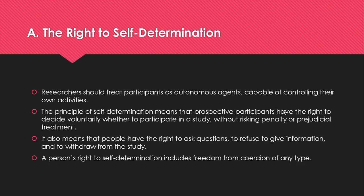A person's right to self-determination includes freedom from coercion of any type. Coercion involves explicit or implicit threats of penalty for failing to participate or excessive rewards for agreeing to participate. The obligation to protect people from coercion requires careful thought when researchers are in a position of authority, control, or influence over potential participants — as might be the case in a nurse-patient relationship. For example, a generous monetary incentive offered to an economically disadvantaged group like the homeless might be considered mildly coercive because such incentives may place undue pressure on prospective participants.